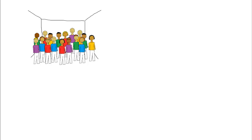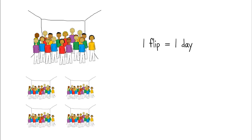If you teach in a self-contained classroom or have extended class periods, an in-class flip could take place in one day, maybe taking about 90 minutes or so, depending on the kind and number of stations you set up. If you teach many groups in shorter periods of time, keep your stations set up over a few days or even a week, with the goal that students will finish them all by the end of a set period of time.